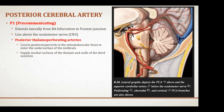The P1 posterior cerebral artery is the pre-communicating segment that extends laterally from the basilar artery bifurcation to the PCOM junction. The basilar artery bifurcates at its apex giving off the two P1 branches. P1 is the segment of the PCA right before the PCOM joins from the anterior circulation, and this P1 segment lies above the oculomotor nerve — cranial nerve three.